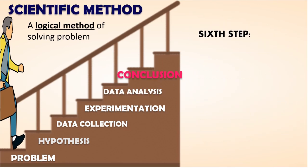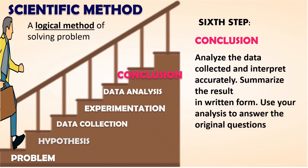The last step is statement of conclusion. After analyzing the data collected and interpreting them accurately, you have to summarize the result in written form. Use your analysis to answer the original questions. What is the difference between the hypothesis and the conclusion? Hypothesis is only a temporary or tentative answer to the question while the conclusion is the final answer to the original question. That concludes all the six steps in scientific method.